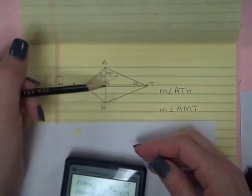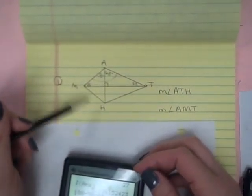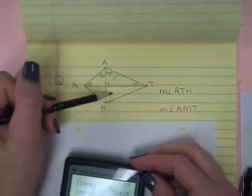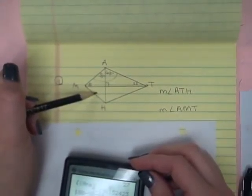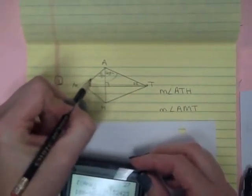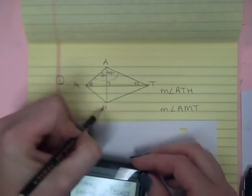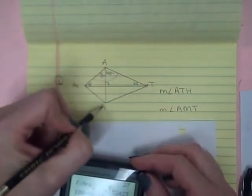Now notice that if I fold this down, since this angle and MHT are congruent to each other, this triangle and this triangle are congruent, and this triangle on the left is congruent to this triangle below it.